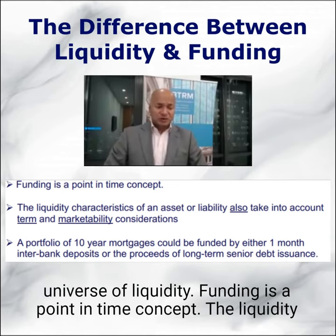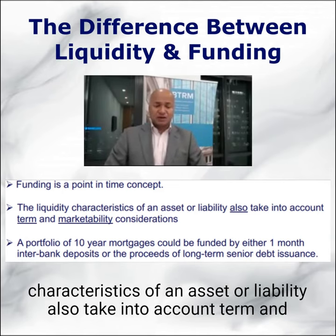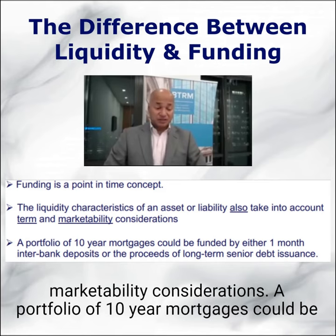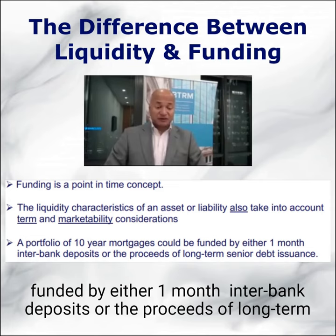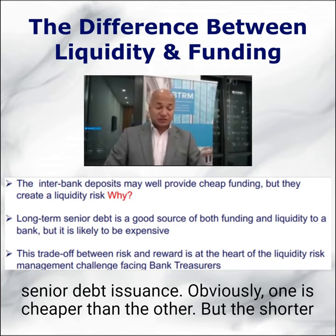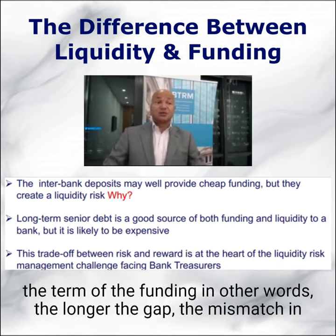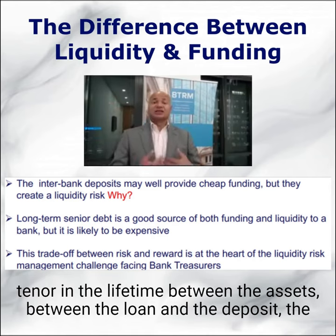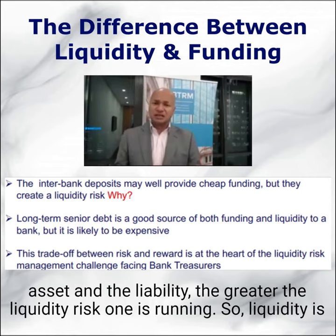Funding is a point-in-time concept, whereas liquidity characteristics of an asset or liability also take into account term and marketability considerations. A portfolio of 10 mortgages can be funded by either one-month interbank deposits or proceeds of a long-term senior debt issuance. Obviously one is cheaper than the other, but the shorter the term of the funding — the longer the mismatch in tenor between the loan and the deposit, the asset and the liability — the greater the liquidity risk when it's running.